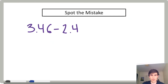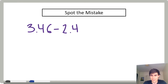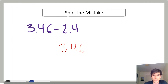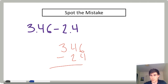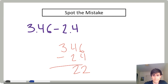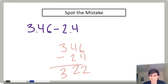Final thing — I want to leave you with a little 'spot the mistake.' Three and forty-six hundredths minus two and four tenths. I might make a mistake — see if you can find it. Six minus four is two, four minus two is two, giving three and twenty-two hundredths. See if you can notice my mistake. Have a great time doing math. Nice job, guys.